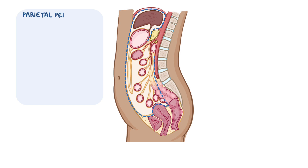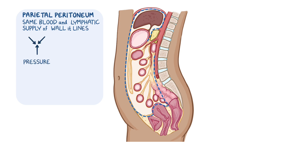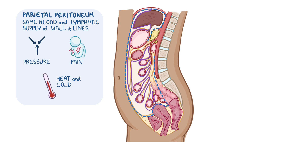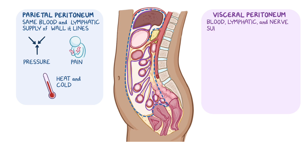The parietal peritoneum has the same blood and lymphatic supply and the same nerve supply as the region of the wall it lines, meaning it is sensitive to pressure, pain, heat, and cold. The visceral peritoneum, on the other hand, has the same blood, lymphatic, and nerve supply as the viscera it covers, meaning it is sensitive to stretch and chemical irritation.